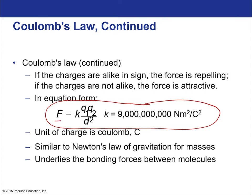Here is Coulomb's Law in equation form. F is for force. If the charges are alike in sign, the forces repel—away from the two particles. If they're opposite in charge, the force is attractive, pointing toward their centers. K is the electrostatic constant: 9×10⁹ N·m²/C². The Coulomb is the fundamental unit of charge. An electron has a charge of approximately 6.626×10⁻¹⁹ Coulombs—a very small amount of charge on an individual electron.